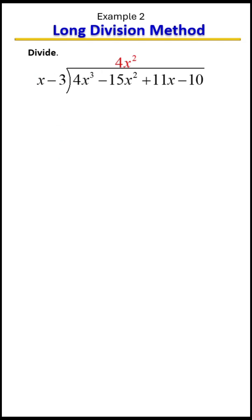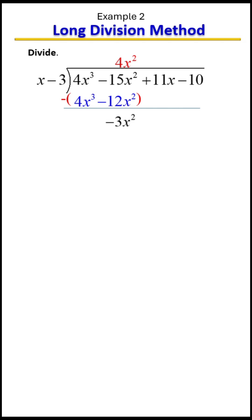Now we're going to multiply that term by both terms on the outside — by the divisor. So 4x squared times x equals 4x cubed, and 4x squared times negative 3 equals negative 12x squared. We subtract, which brings down negative 3x squared, and we also bring down our next term of 11x.